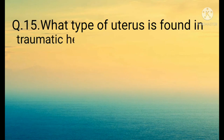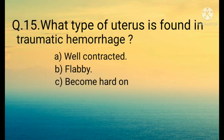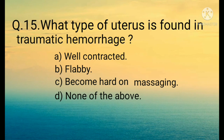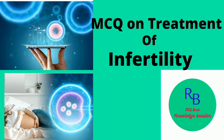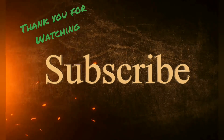Question number fifteen: What type of uterus is found in traumatic hemorrhage? Options are: A) Well contracted, B) Flabby, C) Becomes hard on massaging, D) None of the above. The correct option is A) Well contracted. Please check out MCQ 1 on treatment of infertility.